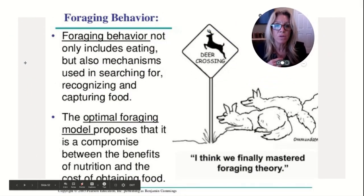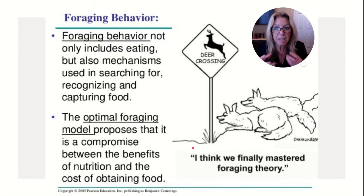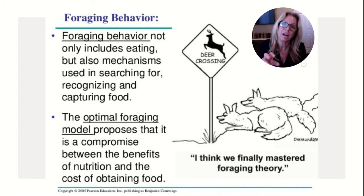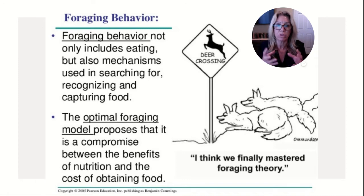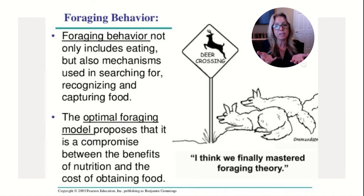Foraging behavior not only includes the process of eating, but also the mechanisms used for searching for that food, recognizing that food, and capturing that food — those are all foraging behaviors. Fill in your notes on that. The optimal foraging model says you have to do a cost-benefit analysis.